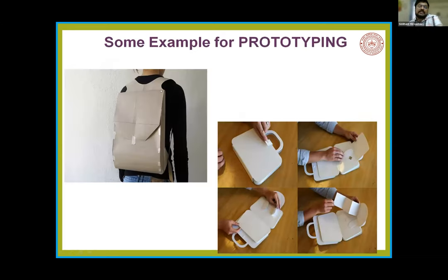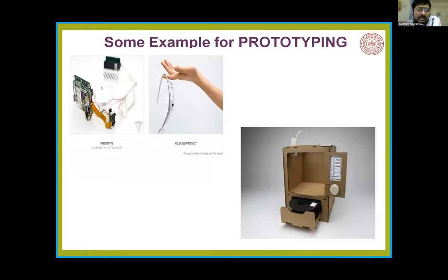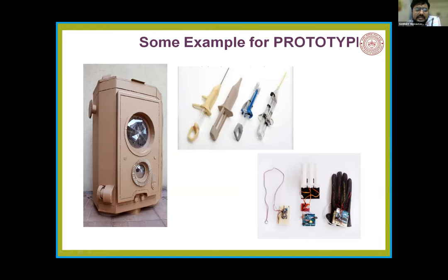Here are some examples of prototyping. This is a school bag made by paper — a very small thing, but we can easily get an idea of how the bag actually looks. There's a small handbag created using paper and small clips. By this we can get an actual idea of what the product is, how it should look, how it should weigh, and how it should ergonomically be structured — whether we are able to handle it or not. Similarly there is an Ironman specs prototype, and this is a 3D printer prototype — an initial prototype to know the worthiness of the product. All of these are made of cardboard, paper, thermocol, and small small things.